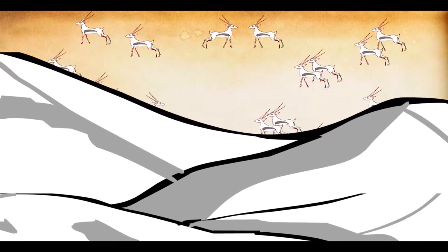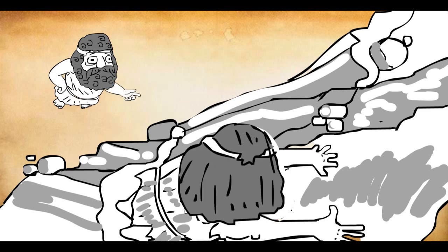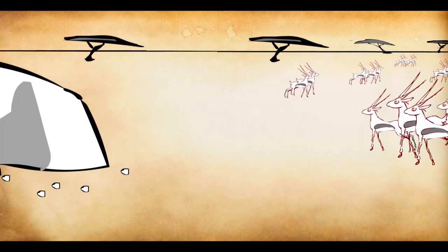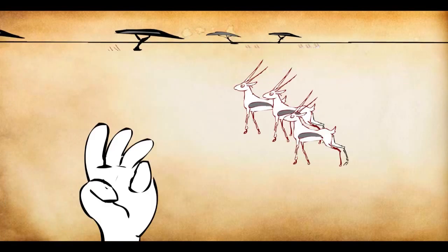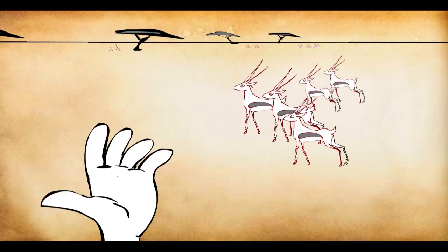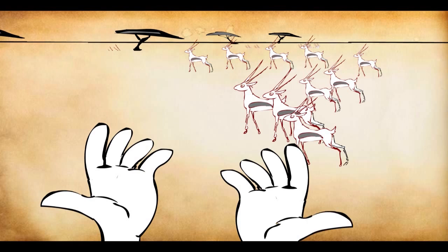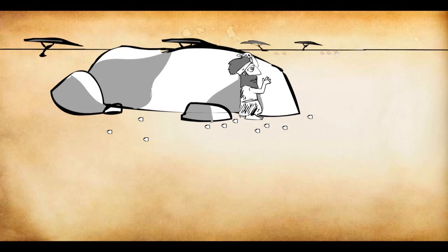Later they realized that they could not communicate or tell the other person exactly how many animals were there. And so they realized that they would need numbers. It is said that they probably started counting by fingers. But since they had just 10 fingers, they could not count beyond the number 10 using fingers.